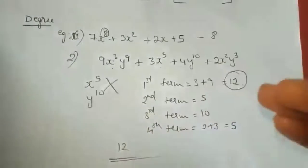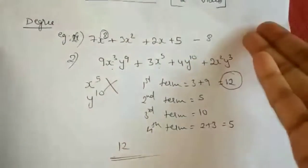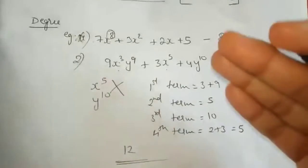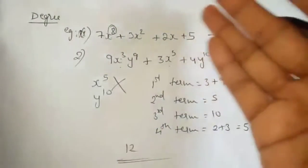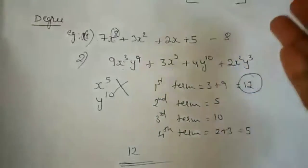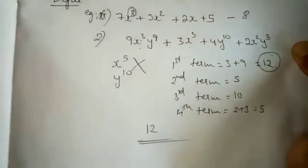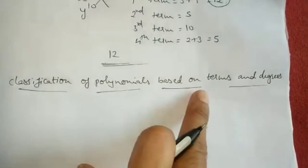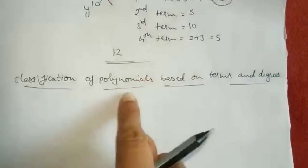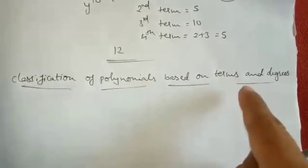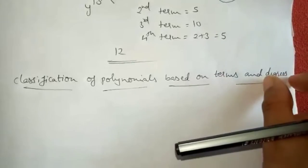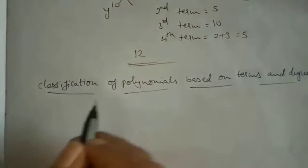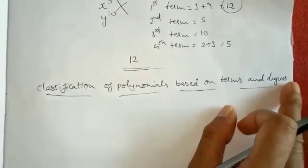Moreover, we will be focusing more on polynomials in one variable. Polynomials in two or three variables will not be the main focus. We will be studying polynomials in one variable in this chapter more. Next, classification of polynomials based on terms and degrees. We will classify these polynomials according to terms and degree. First, we will see classification based on degree.